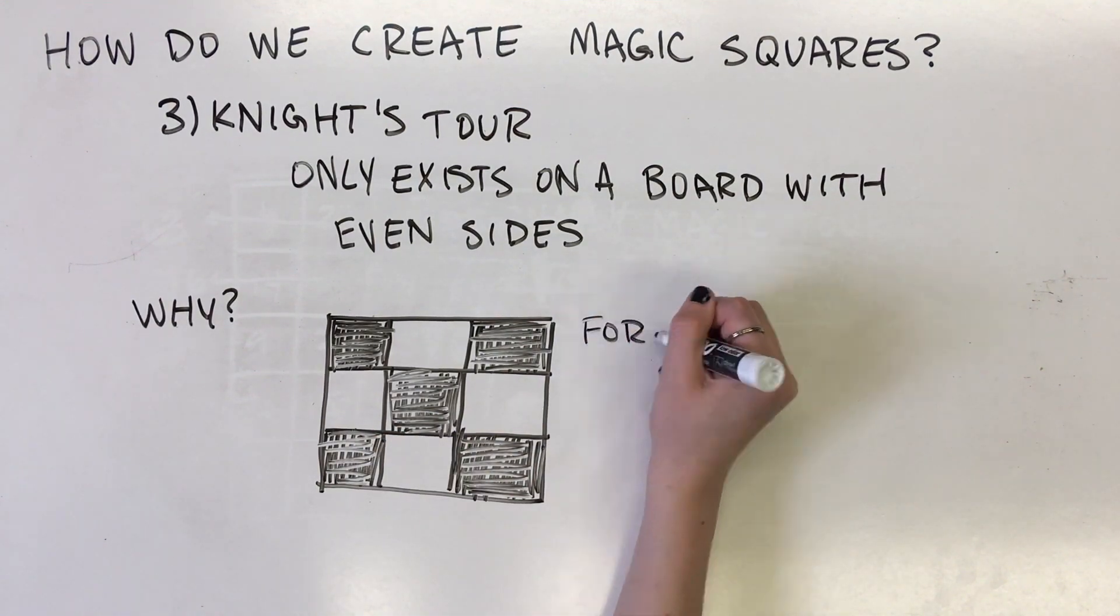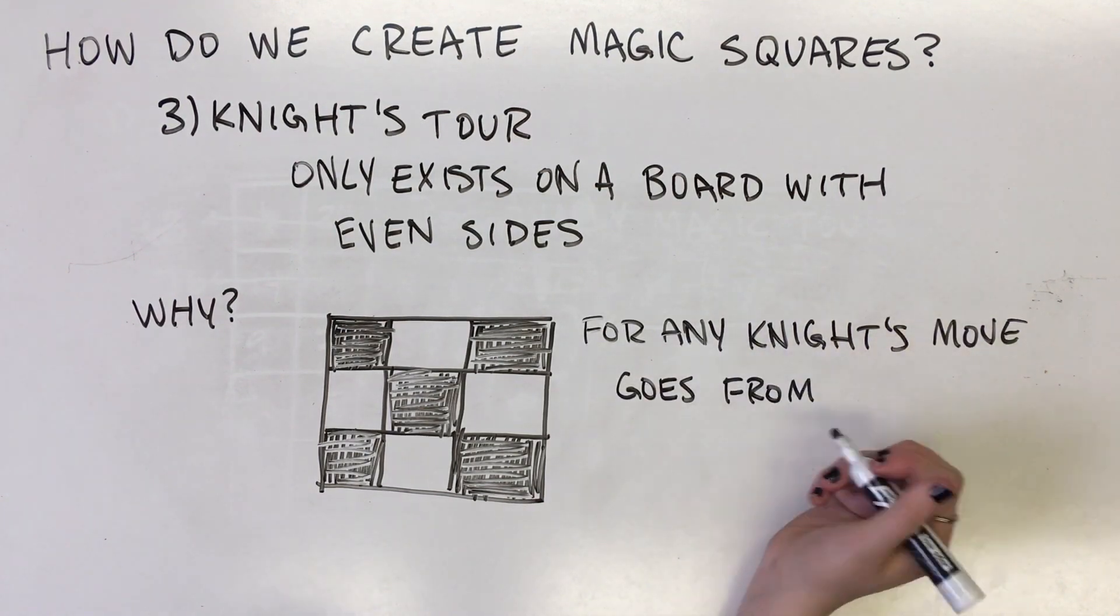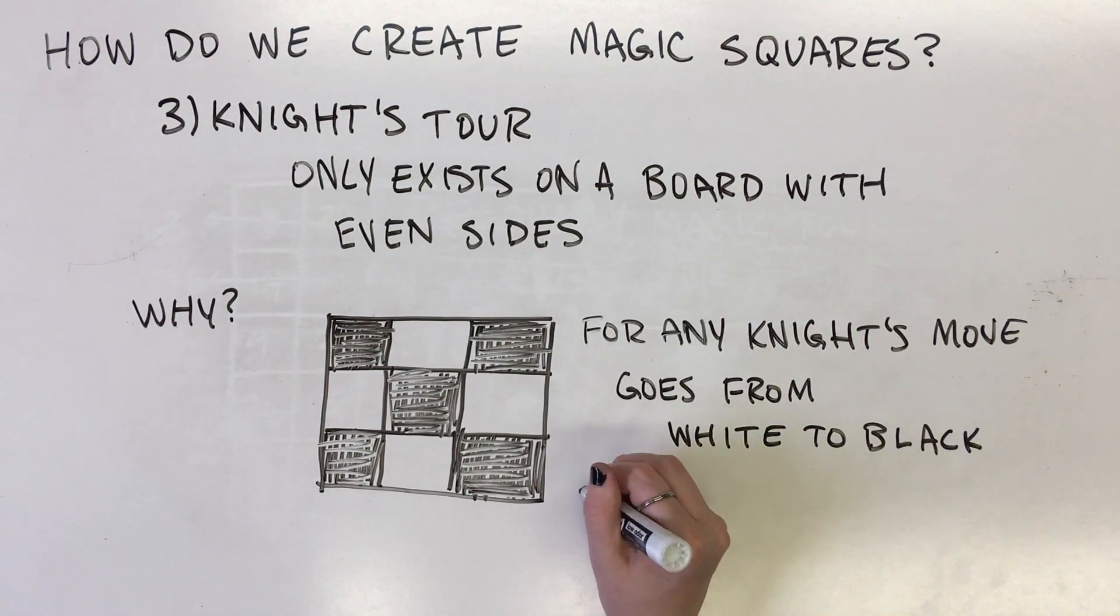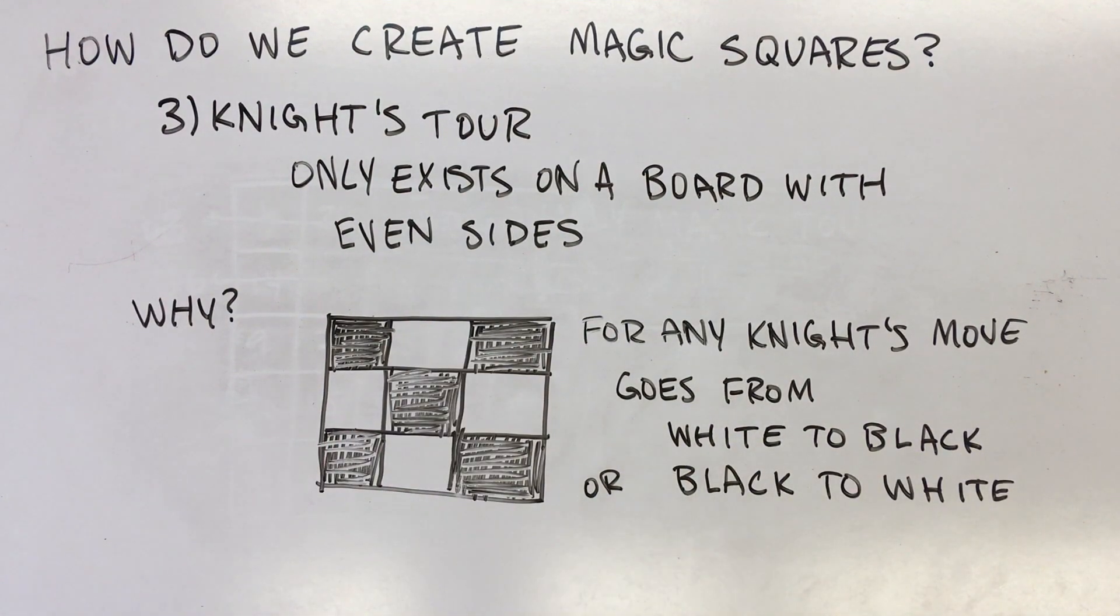In a board with an odd number of columns, adjacent rows alternatingly contain an odd number and an even number of odd numbered cells. The rows' sums would therefore be alternately odd and even.